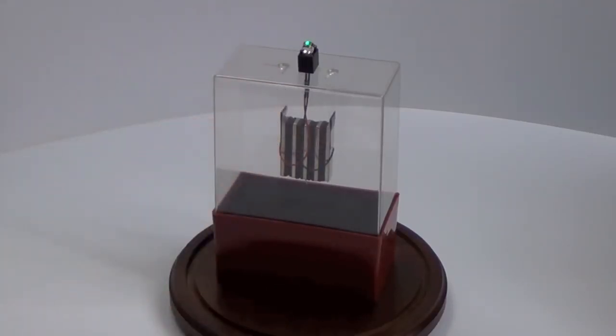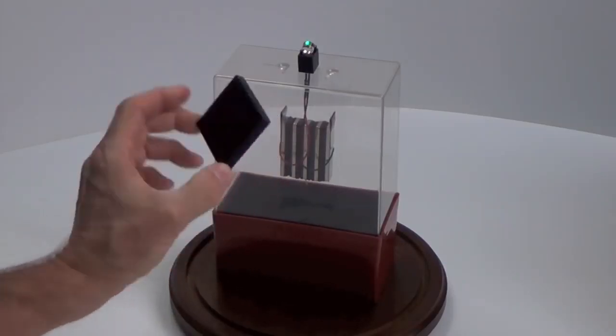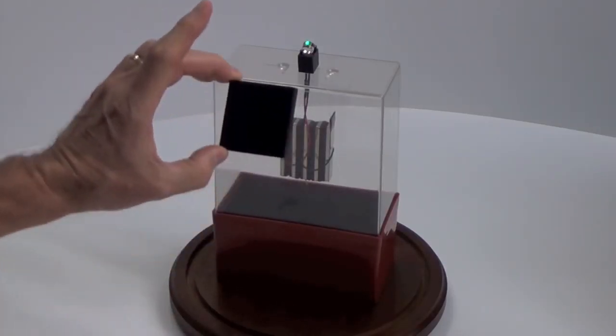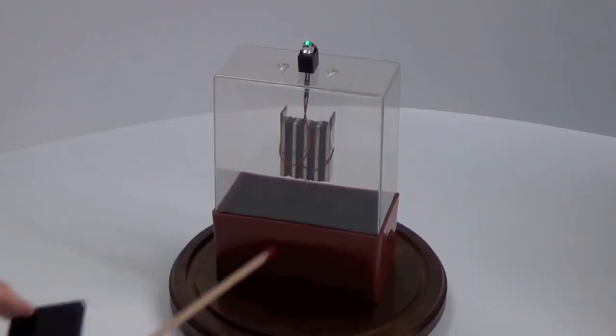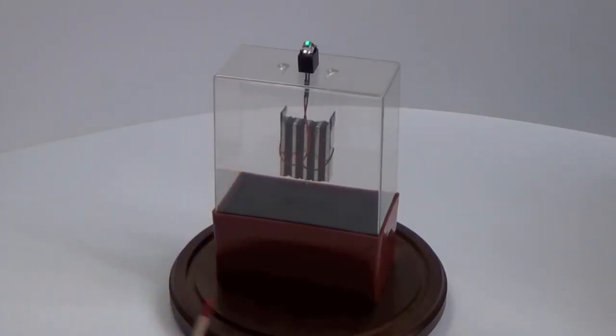But if you take four of these and put them together, you would come up with this size, which is two inches square. Divide this into four pieces and you've got the black parts that you see inside there of these cells.